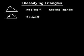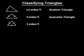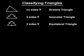A triangle that has two sides congruent is called an isosceles triangle. And a triangle that has all three sides congruent is called an equilateral triangle.